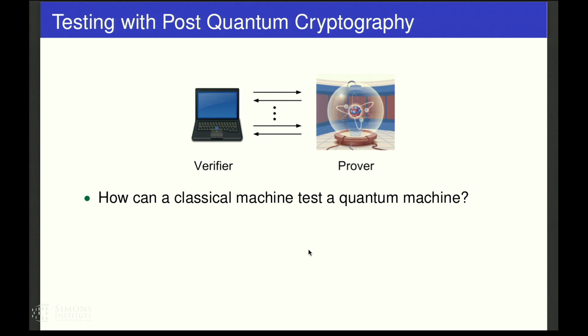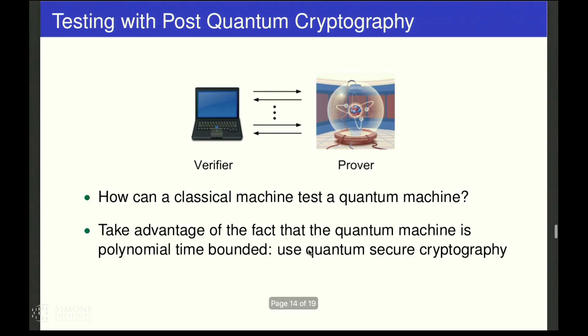This imbalance between the verifier and the prover can be addressed by classical cryptography. The quantum prover is quite powerful, but he's not all powerful. We can take advantage of the fact that the quantum machine is still efficient. He's polynomial time bounded.